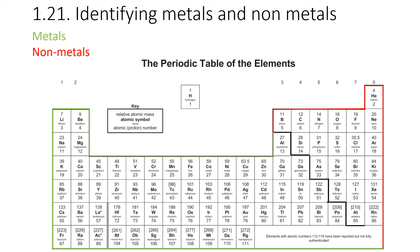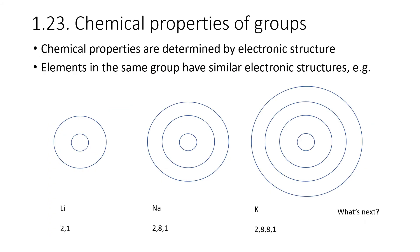For specification point 1.23, you have to be able to explain why the chemical properties of elements within the same group are similar. Chemical properties are determined by electronic structure — most importantly by the number of electrons in the outer shell and how far away that electron is from the nucleus. Looking at group one, each element has one electron in the outer shell: lithium has two in the first shell and one in the outer; sodium has two in the first, eight in the second, and one in the outer; potassium has two, eight, eight, and one. The key point is that the one outer electron is the one doing the reacting, and therefore they react in similar ways.